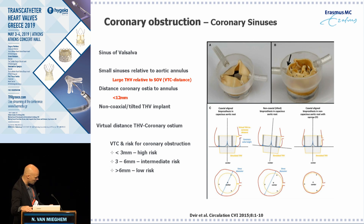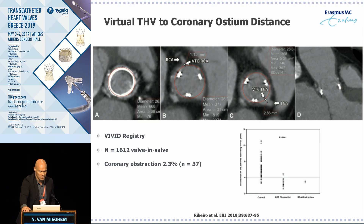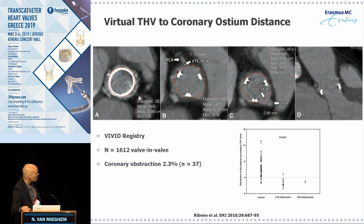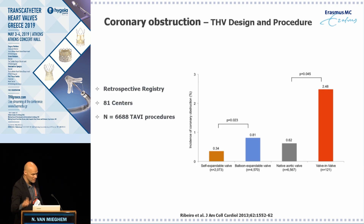So, if the distance between the coronary ostium and your virtual valve frame is below three millimeters, you are at high risk for coronary obstruction; between three and six millimeters there is intermediate risk. This is illustrated by CT scanning where you delineate your valve framework and measure the distance to the coronary ostium. In a study by Ribeiro published in the European Heart Journal, patients with left or right coronary obstruction typically had a distance below four millimeters, whereas patients without obstruction had distances above four millimeters.